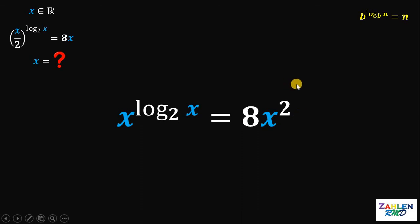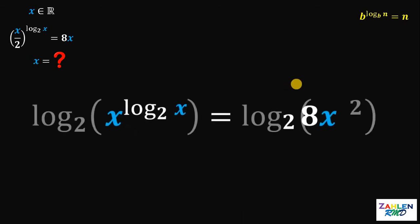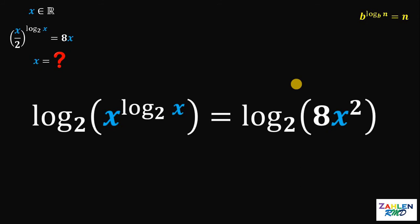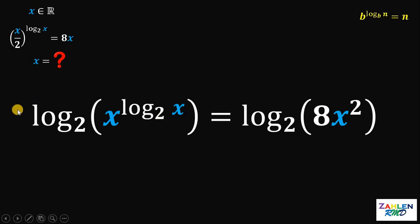At this point, let's take the logarithm on both sides, and we will choose base 2. The reason we choose base 2 is because on the exponent of x, we have logarithm of x to the base of 2, so to make it consistent, we will choose base 2.